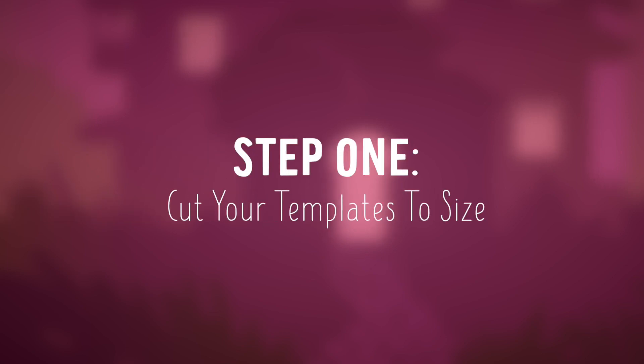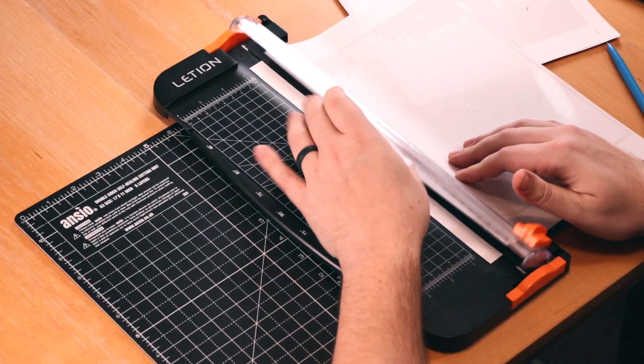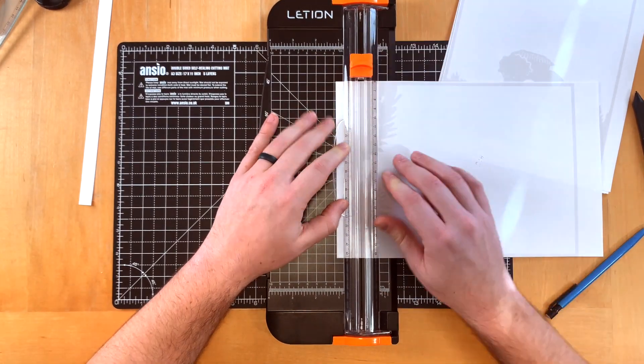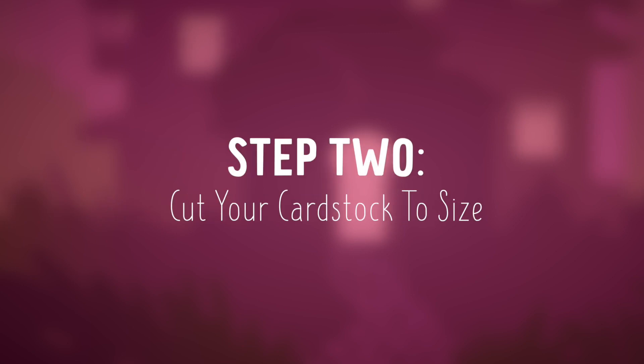Cut your templates down to the correct size. If you have a guillotine paper cutter, they are great for a straight cut. If not, just use your craft knife and a metal or wooden ruler. Be careful to keep your fingers out of the way of the blade. Next, take your cardstock and cut it down to the exact same size as your template.